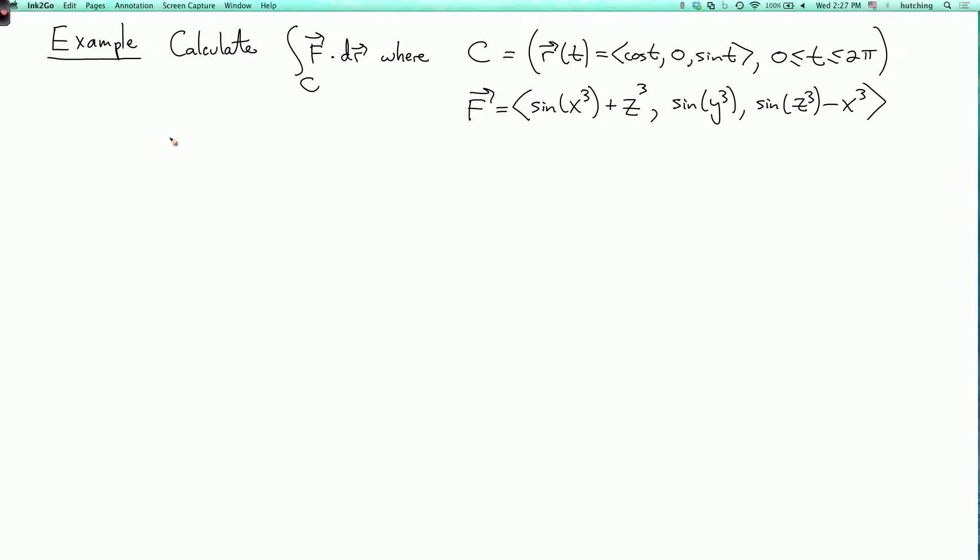Here is an example where we can use Stokes' theorem to calculate something. Our problem is to calculate the integral over c of f dot dr, where c is the curve given by r(t) = (cos t, 0, sin t) as t goes from 0 to 2π.